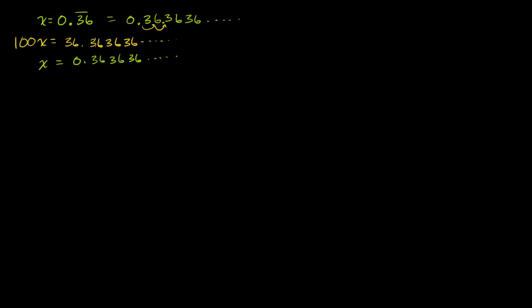Notice that when we write 100x, the 3's and the 6's still line up with each other when we align the decimals. You want to make sure you get the decimals lined up appropriately. The reason why this is valuable is that when we subtract x from 100x, the repeating parts will cancel out. So let's subtract. On the left-hand side, 100x minus x gives us 99x. On the right-hand side, the repeating part cancels out and we're just left with 36. We can divide both sides by 99.